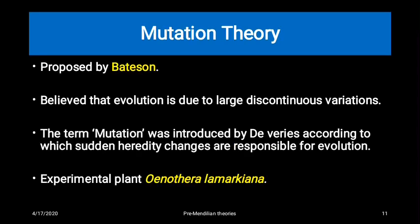The last theory is the mutation theory. It was proposed by Weismann, who believed that the main reason for evolution is large discontinuous variations, which were termed mutations by Hugo de Vries. To explain the mutation theory, he used the plant specimen Oenothera lamarckiana.